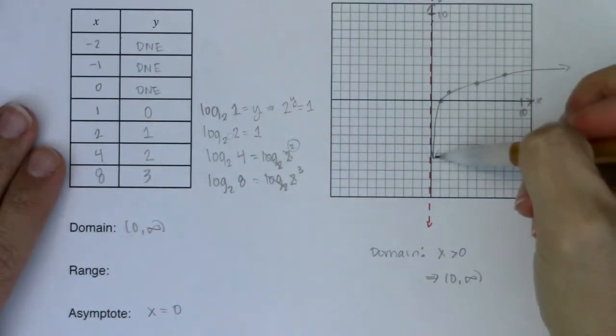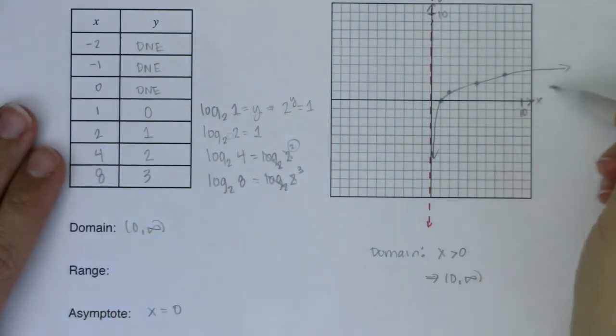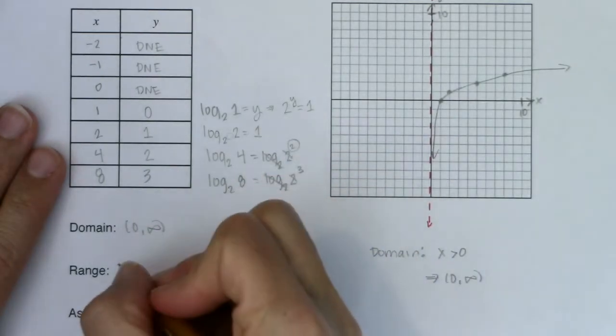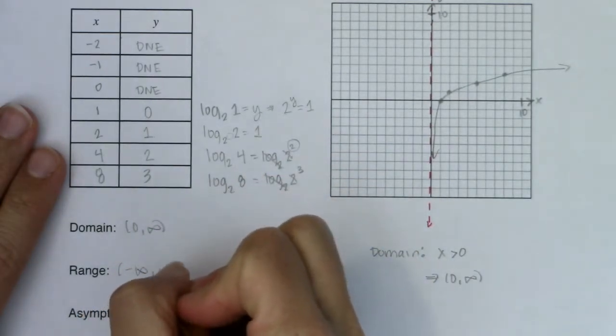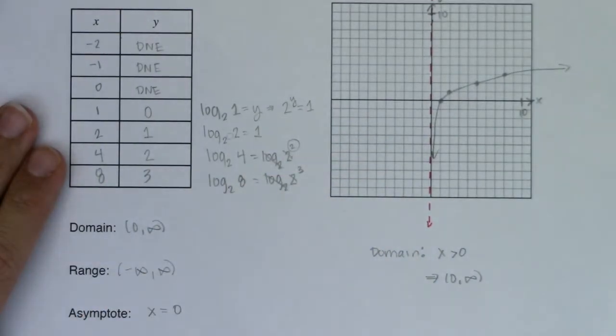Now my range, you can see I'm heading down forever here and I've got up forever here. So my range is negative infinity to infinity.